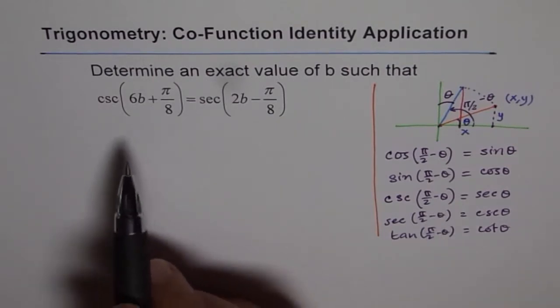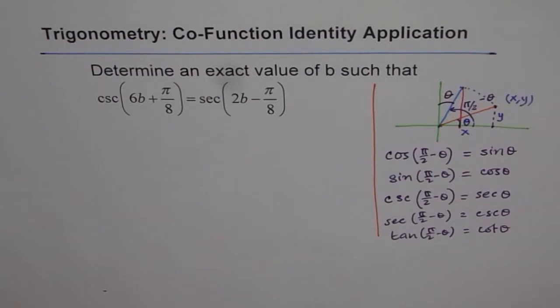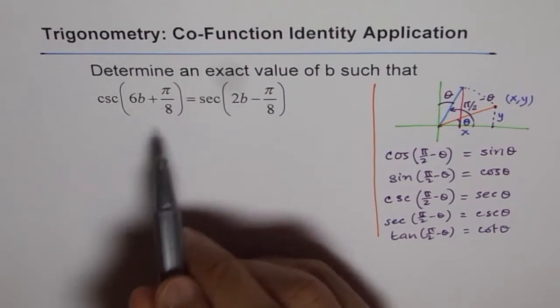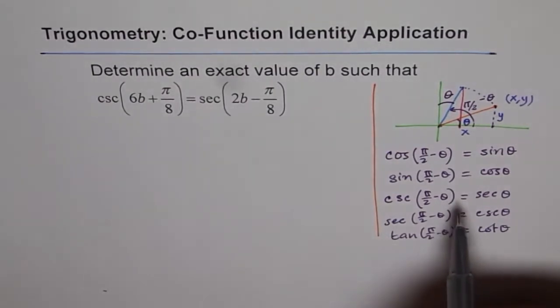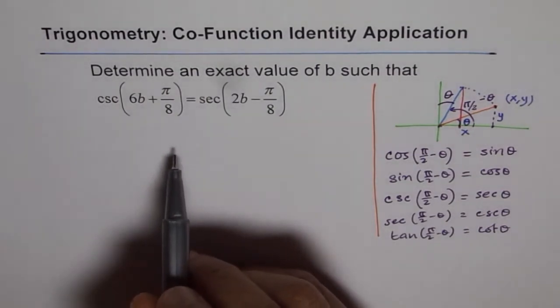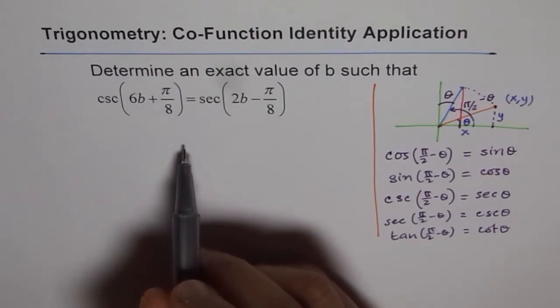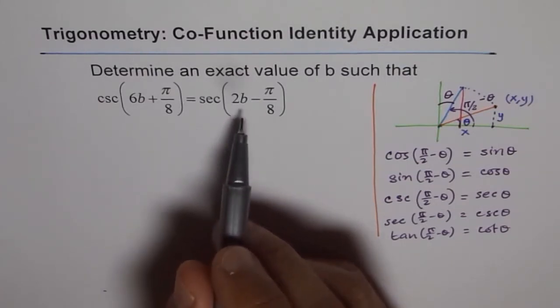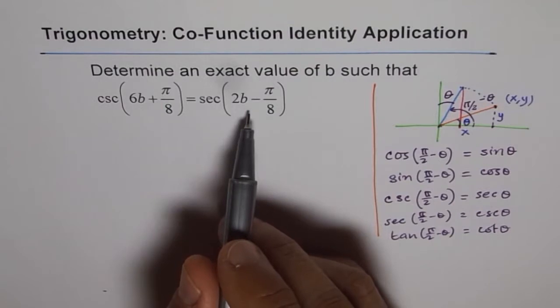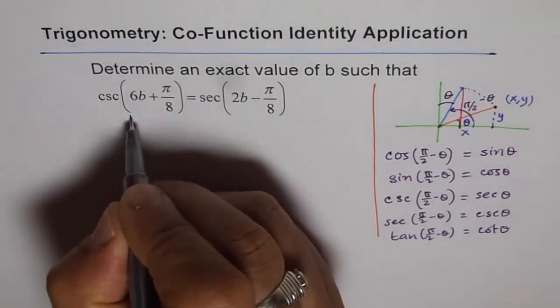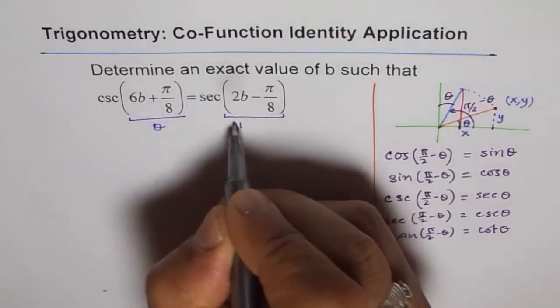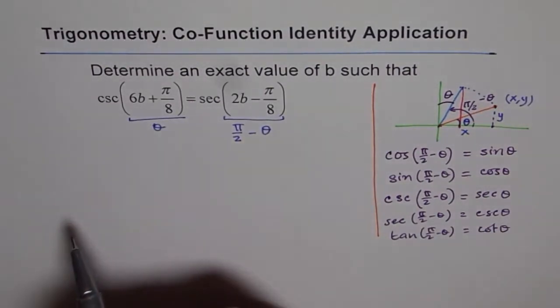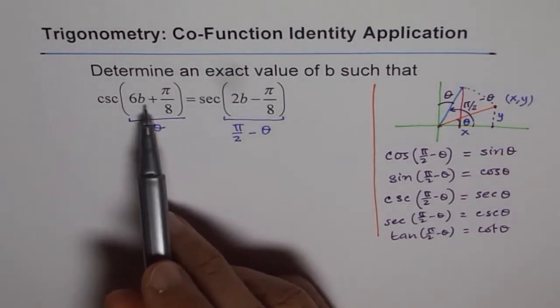We will use this property here. We notice that we have something in cosecant and something in secant and they are equal. They are equal only if there is a relation existing between them, and that is their angles are in a difference of π by 2. Therefore, we can write that this angle should be π by 2 minus this angle. If this angle is theta, then that angle should be π by 2 minus theta. In that case, cosecant becomes secant.